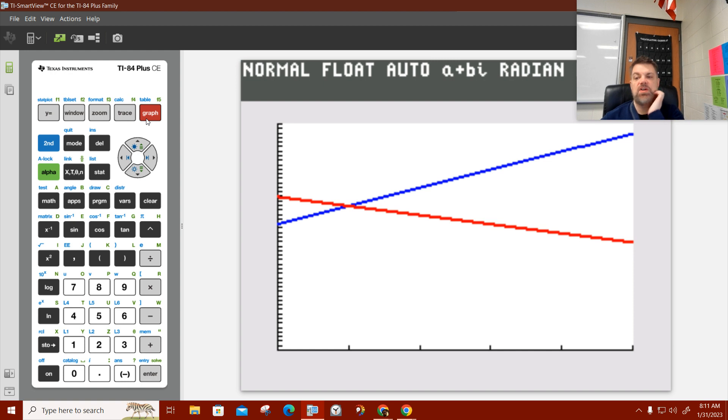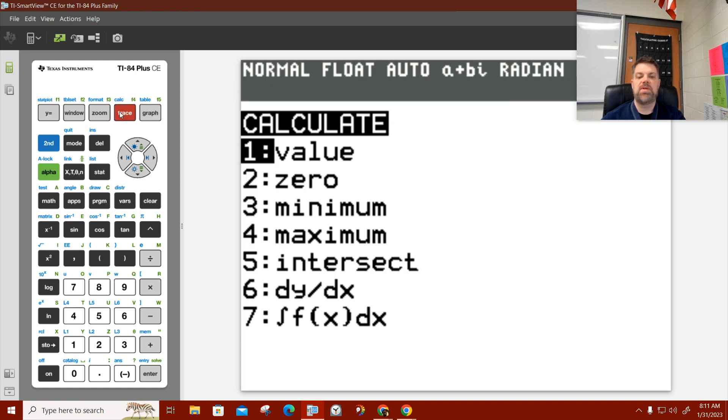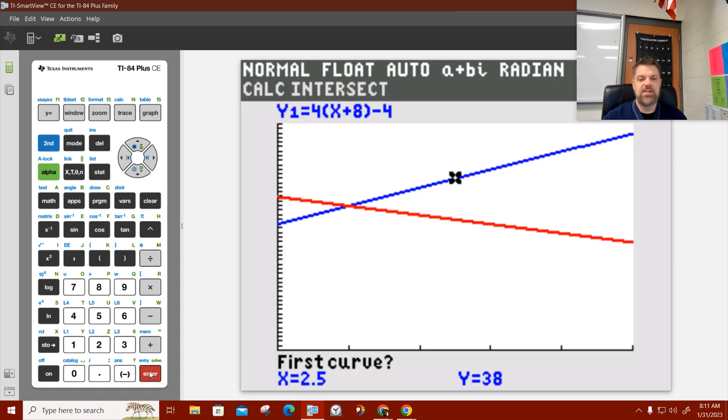Now we could see if it crosses at 1 by simply hitting, remember the calculation button? See where that says above the trace button? In blue, it says calc. So hit second, trace, and that pulls up a calculate menu. Which one helps us find the intersection? Who said intersect? You're a genius. Anyways, let's go. Don't try to claim it after she said it.